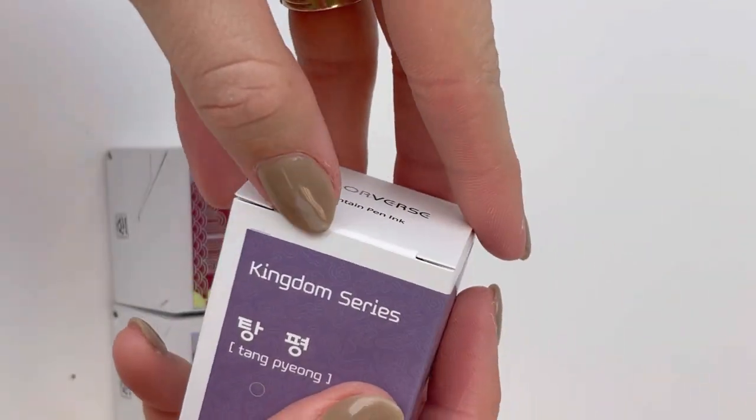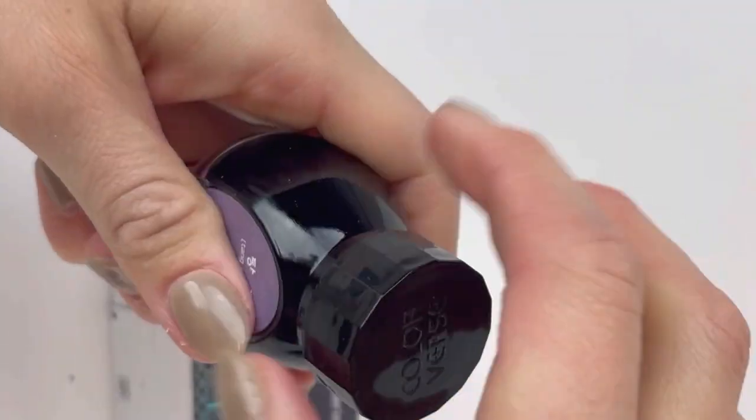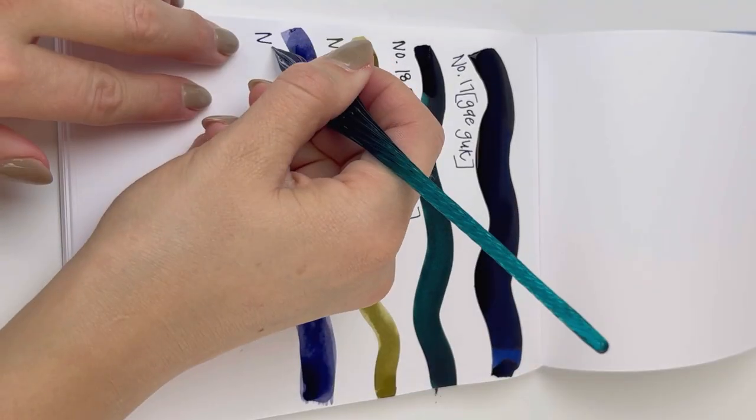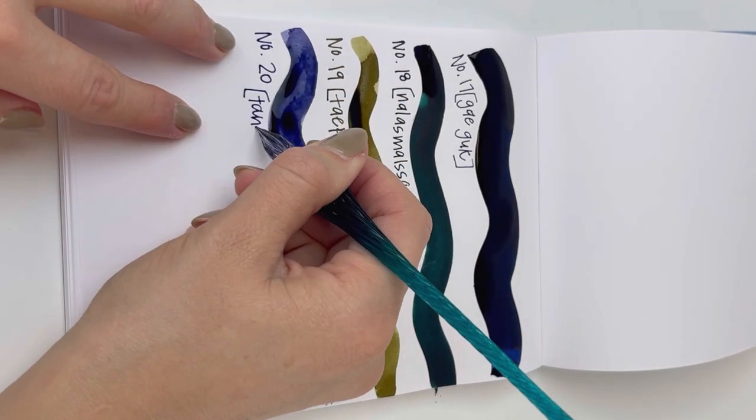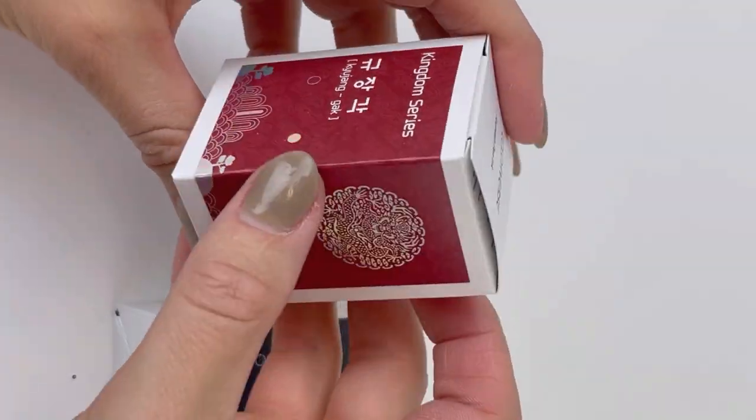Next we have, I believe this is the one that we, yeah, number 20, Teng Pai Yeong. This is the ink that we just featured recently in a comparison of different purple inks. And if you missed that, scroll back a bit in our feed and check it out.